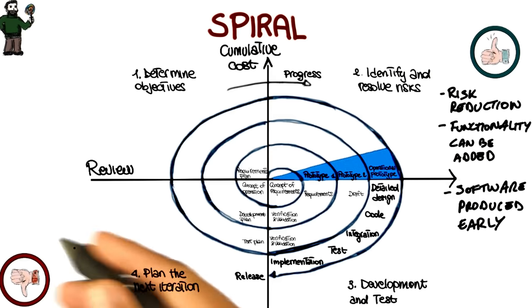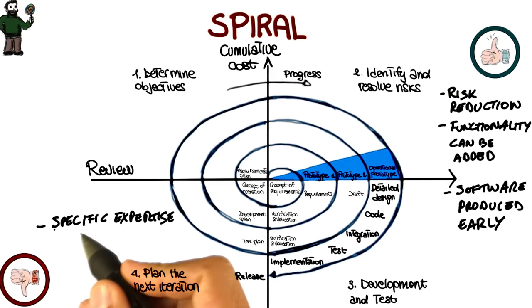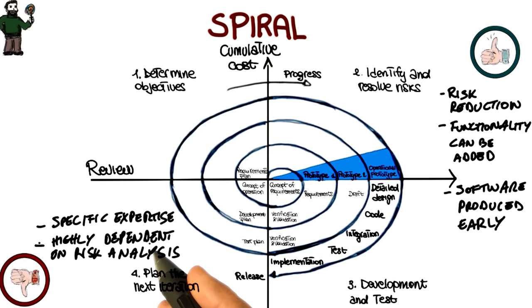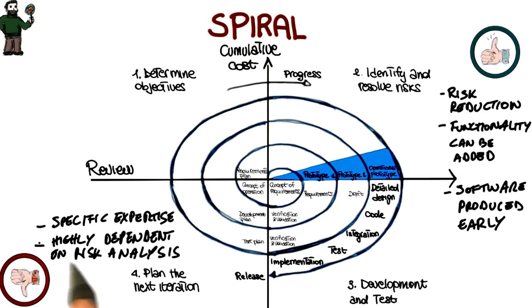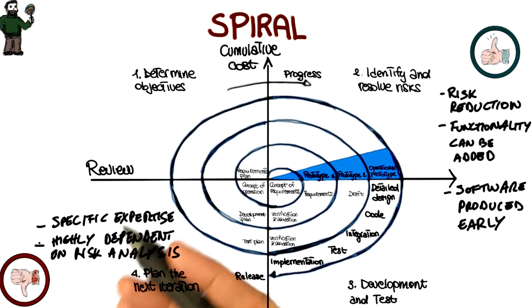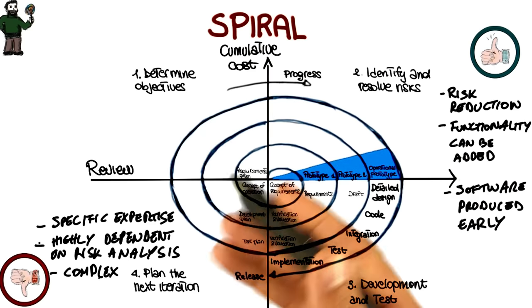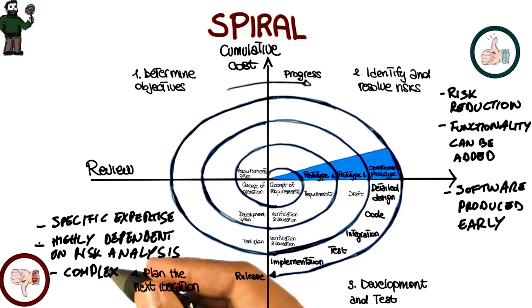The main disadvantages of the spiral model are that risk analysis requires highly specific expertise, and unfortunately the whole success of the process is highly dependent on risk analysis, so risk analysis has to be done right. Finally, the spiral model is far more complex than other models, like the waterfall model, and therefore it can be costly to implement.